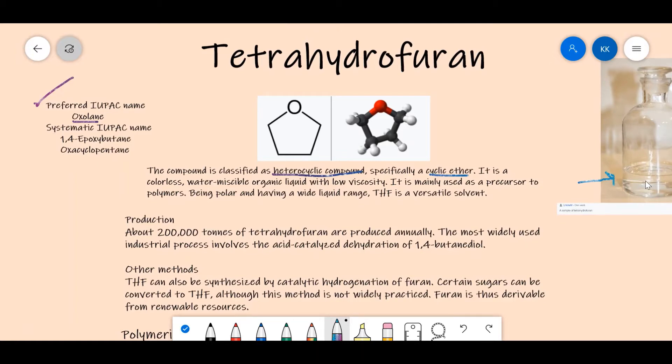It is water miscible. It is mainly used as a precursor to polymers, so it is very important in polymerization reactions. It is polar and has a wide liquid range, hence it is a very versatile solvent. Now let's look at the production of THF. About 200,000 tons of tetrahydrofuran are produced annually.